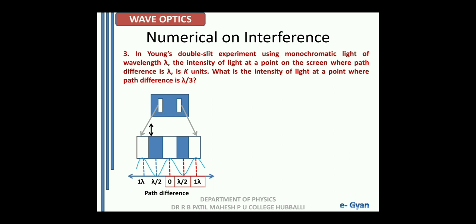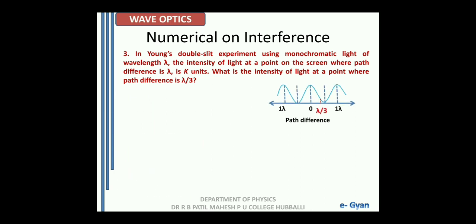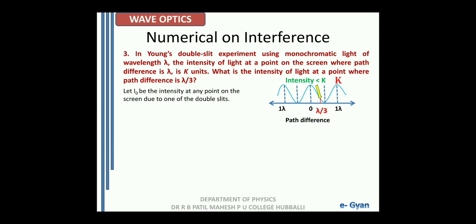At path difference 0 we have maximum intensity, at lambda by 2 minimum intensity, and at 1 lambda maximum intensity. Now if we consider the intensity pattern with respect to path difference, at lambda the intensity is given to be k units. We have been asked to find the intensity at a point where path difference is lambda by 3. Let I0 be the intensity at any point on the screen due to one of the double slits. Intensity at any point where the phase difference is phi is I equal to 4 times I0 into cos squared of phi by 2.